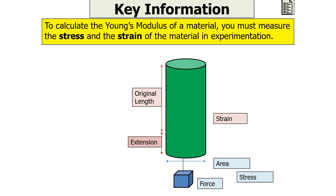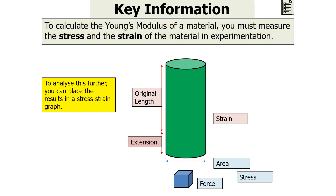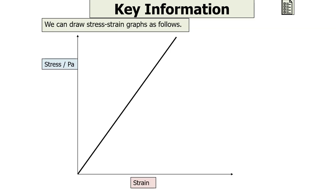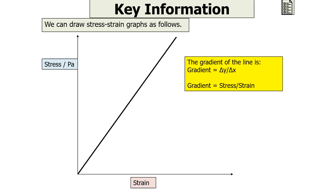To calculate the Young Modulus of a material, you must measure the stress and the strain in experimentation. You can then place the results in a stress-strain graph. Stress goes on the y-axis and strain on the x-axis. Since gradient is y over x, in this case the gradient is stress over strain, which is the Young Modulus.